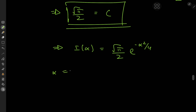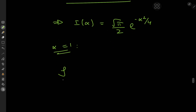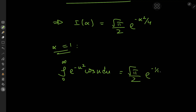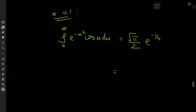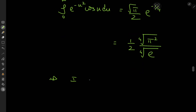So the integral function I of alpha equals root pi over 2 times e to the negative alpha squared over 4. The target case is alpha equals 1, which gives the integral from 0 to infinity of e to the negative u squared times cosine u du equal to root pi over 2 times e to the negative one quarter. We can write this more cleanly as one half times the fourth root of pi squared over e.